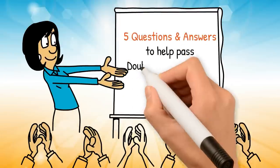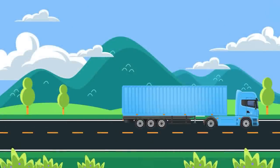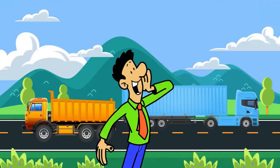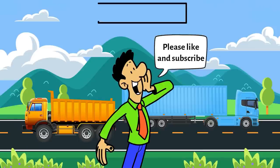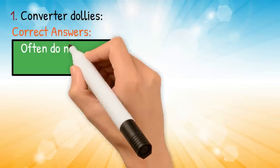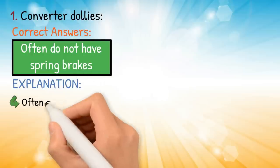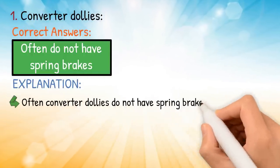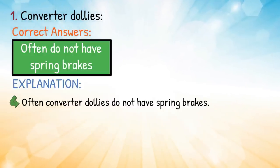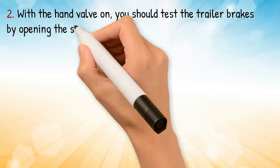Five questions and answers to help pass the double/triple trailer CDL endorsement test. Before we get started, please like and subscribe if you enjoy and would like more content about CDL education. Question one: converter dollies — correct answer: often do not have spring brakes. Explanation: often converter dollies do not have spring brakes.